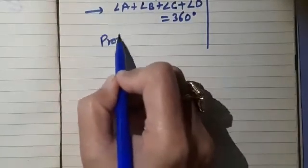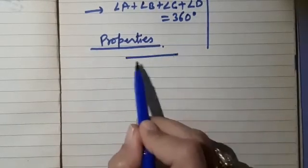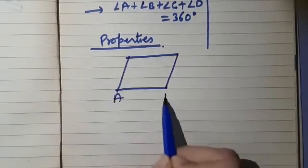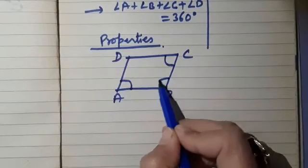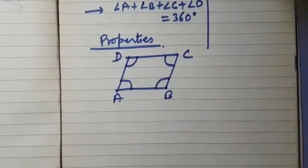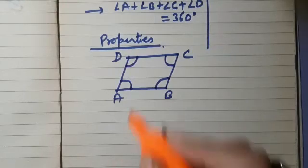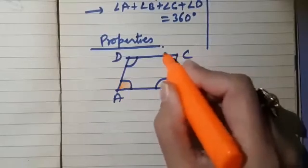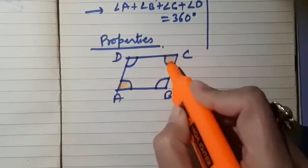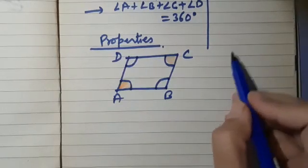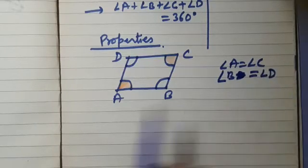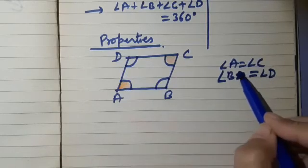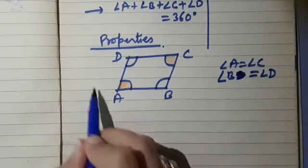Now let us explore some interesting properties specific to the parallelogram. Drawing parallelogram ABCD with angles A, B, C, D — notice that opposite angles are equal: angle A equals angle C, and angle B equals angle D. So the first property is: opposite angles of a parallelogram are equal.